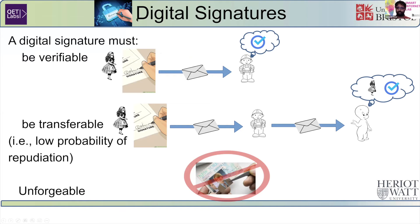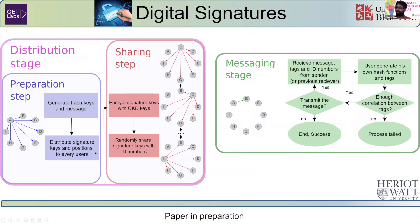The next protocol I'll quickly touch upon is digital signatures. The idea is that if Alice digitally signs a document and sends it to Bob, Bob must be able to verify that it came from Alice. It must be transferable, so the document sent to Bob can be forwarded to Casper, who should also verify it was indeed from Alice. And it should be unforgeable. Using protocols developed by collaborators at Heriot-Watt, we were able to demonstrate such things on our quantum network as well.